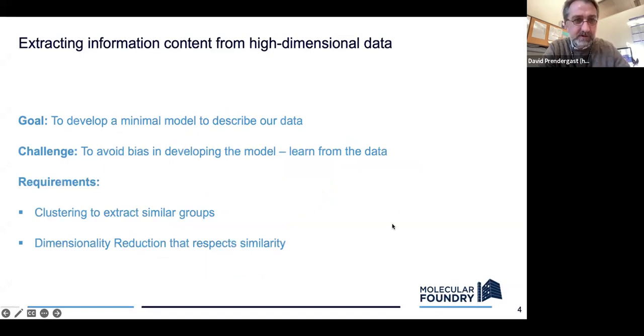Okay. So just some quick goals to focus a talk. So the general problem is that we're trying to get information content from high dimensional data. And that's a general problem that exists for many scientists. Our goal would be to try to develop a minimal model to describe our data. That's typically what physicists try to do. Physicists are cheap in the sense that they want to do the least amount of work and get the greatest possible outcome. So simple models are the most fascinating and the most exciting because they can describe a lot of things very easily.